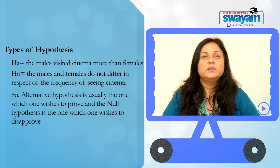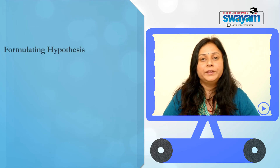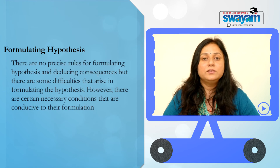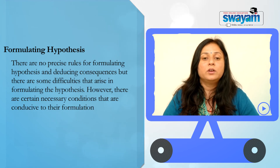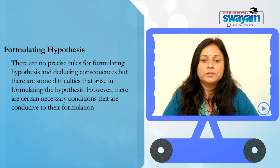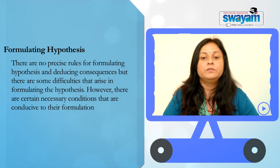Once we are done with the types of hypothesis, let us understand how hypothesis is formulated, because that is the most important concept in research. There are no precise rules for formulating hypothesis and reducing consequences, but there are some difficulties that arise in formulating the hypothesis. However, there are certain necessary conditions that are conducive to the formation.